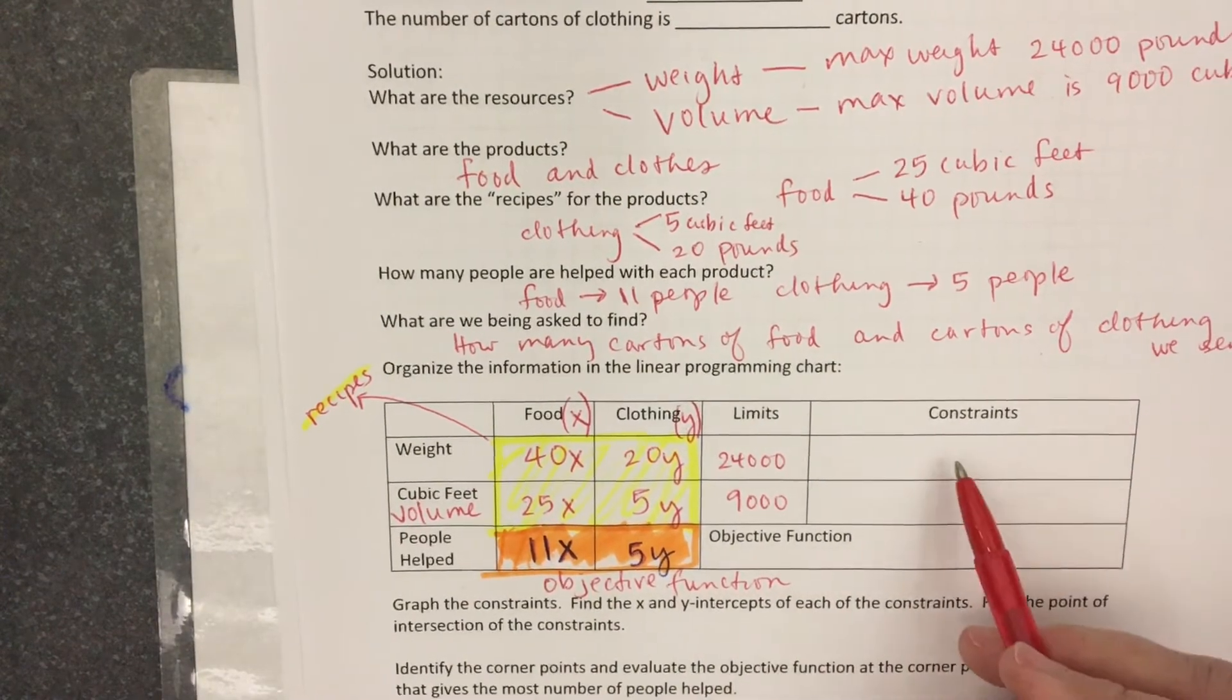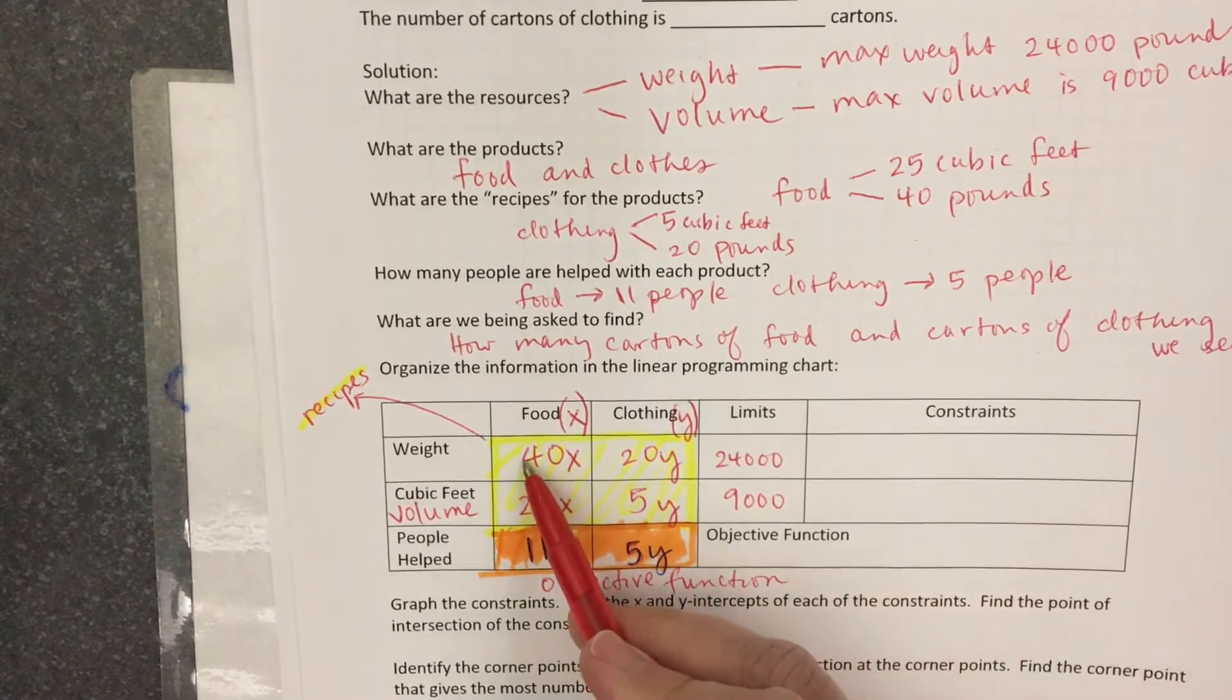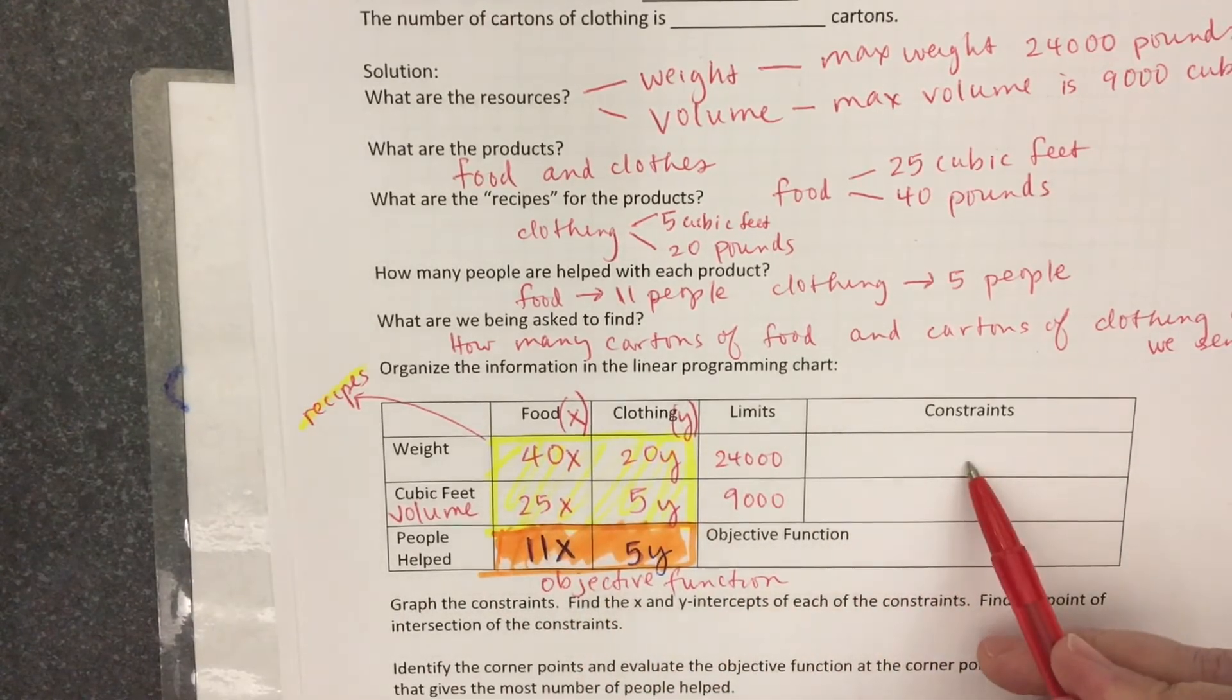To get the constraints and the objective function, we'll read these lines straight across.